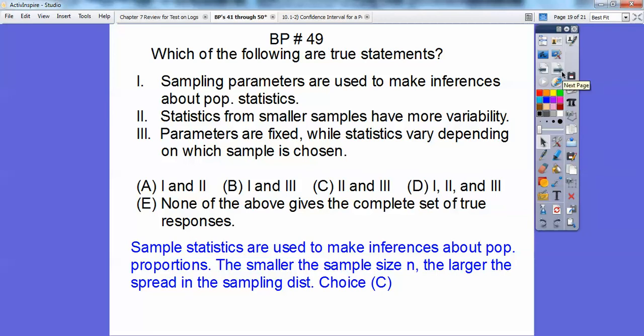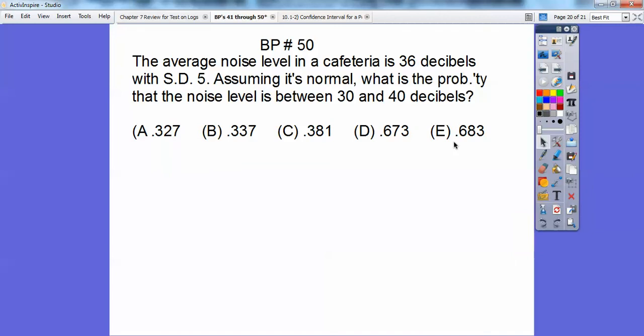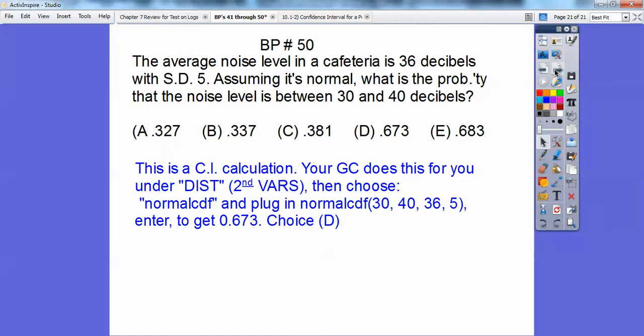I got one more for this lesson here. The average noise level in the cafeteria is 36 decibels with a standard deviation of five. Assuming this is normal, what's the probability that the noise level is somewhere between 30 and 40? This is a confidence interval one. You can use your formula if you want or you can use your calculator. I choose to use my calculator. So I'm going to go for a normal CDF. And that's found in my TI calculators under distribution, which is your second function variables. And you go down to normal CDF and you put in your numbers that it's supposed to be between. And then here's your average right here. And here's your standard deviation. And you go ahead and hit enter. And you should get choice D. Take care.